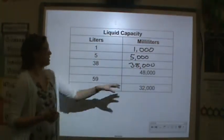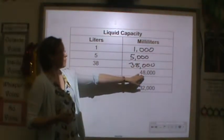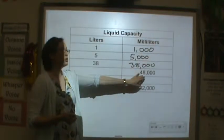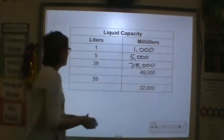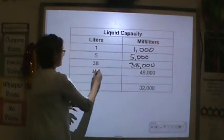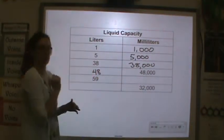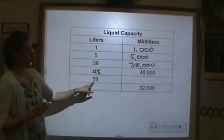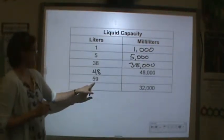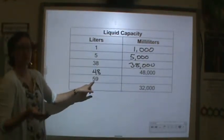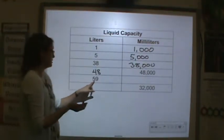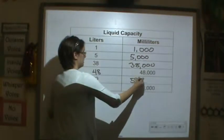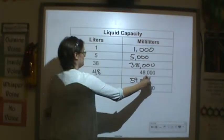Now let's go the other way. Forty-eight thousand milliliters — how many groups of a thousand do you have? You have forty-eight, so that's forty-eight liters. Fifty-nine liters: multiply by a thousand, so fifty-nine times a thousand is fifty-nine thousand milliliters.